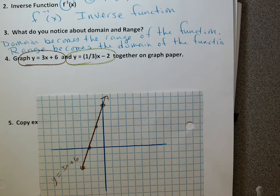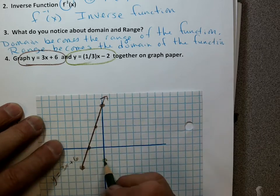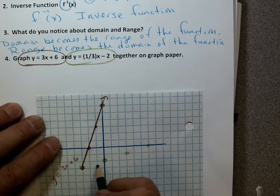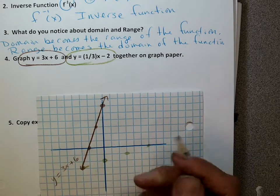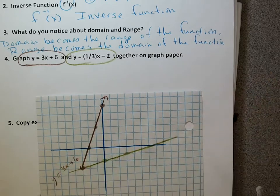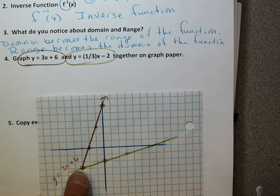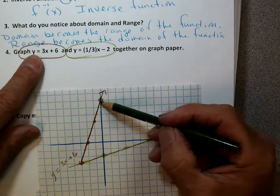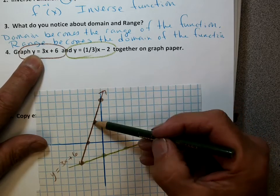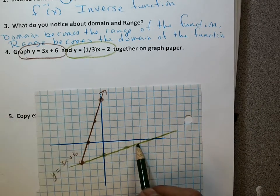My other equation — one-third x minus 2 — I'll start at negative 2 and go up 1 over 3. These two graphs are inverses. Let's look at the brown graph: start at 6, go up 3 over 1. For the green one, start at negative 2 and go up 1 over 3.